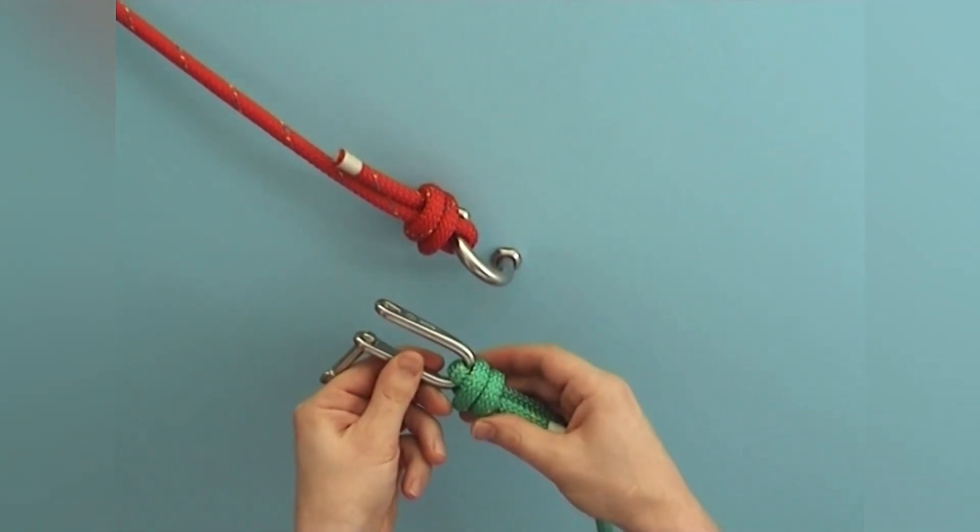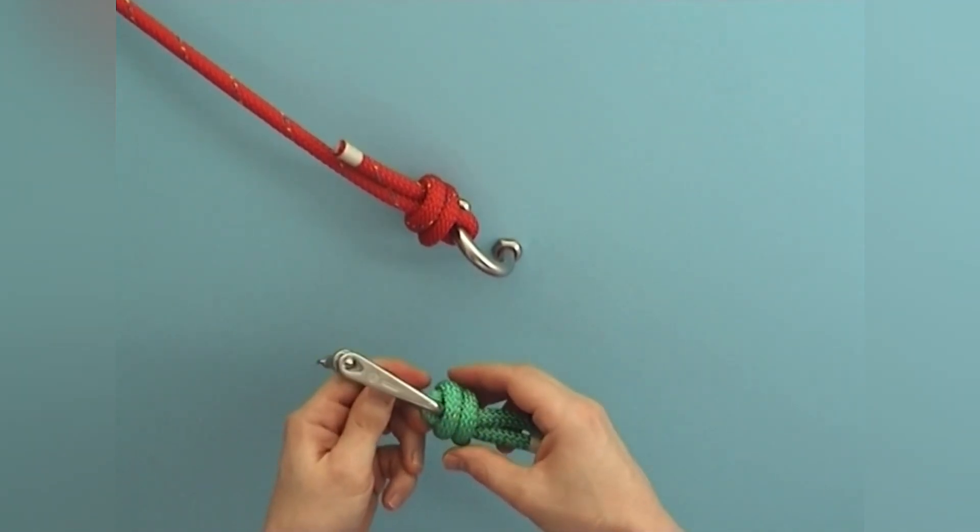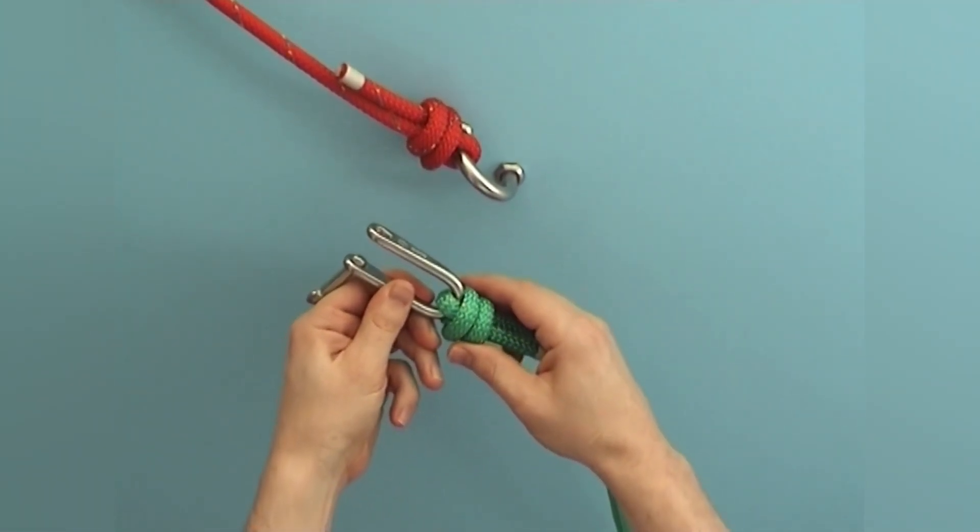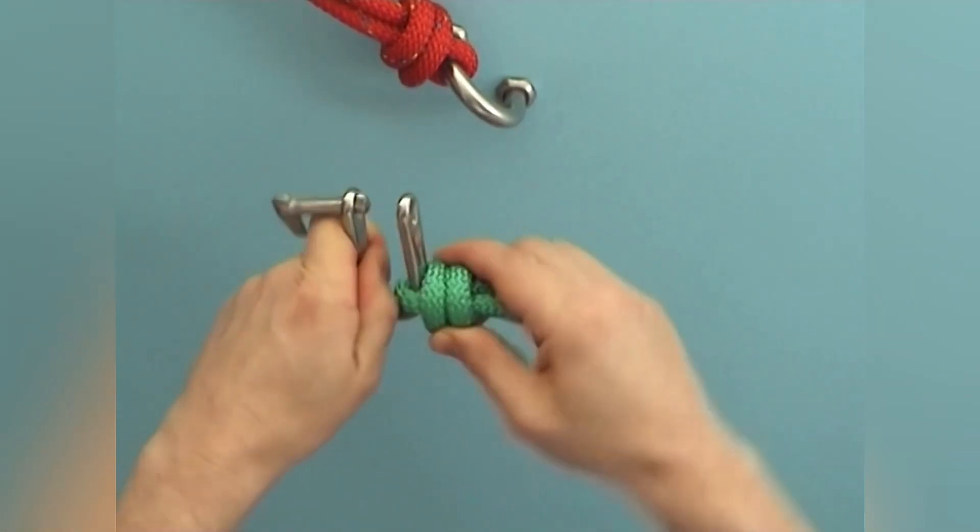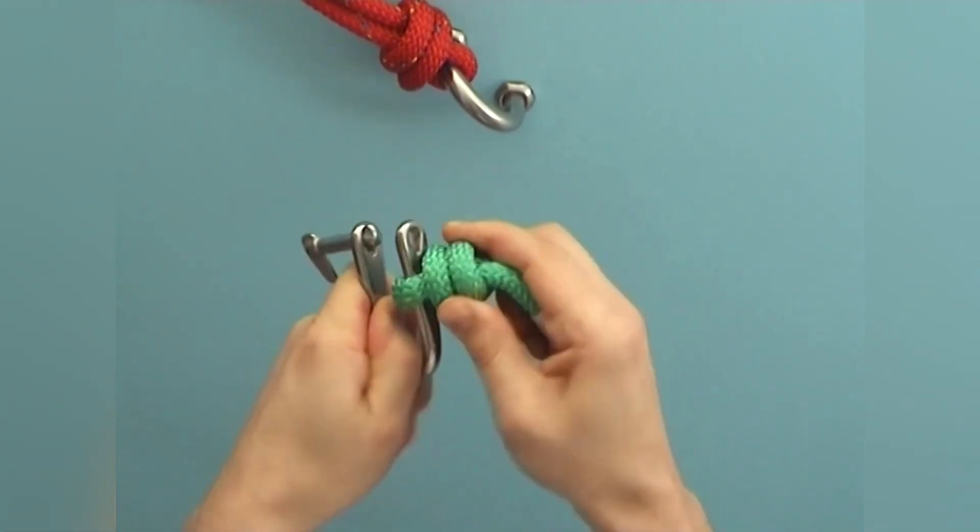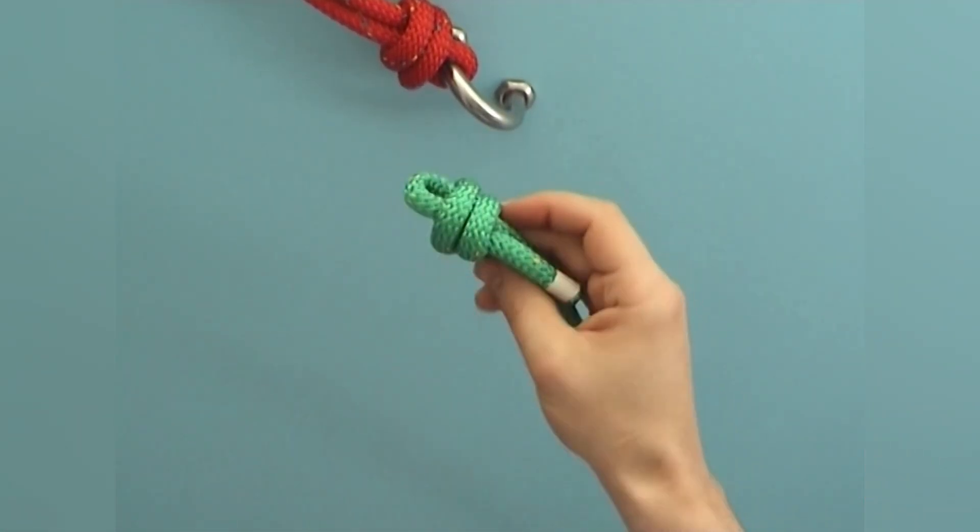However, the scaffold knot is often difficult to untie after great strain. The best way, if possible, is to work the shackle out here and simply pull this loop through.